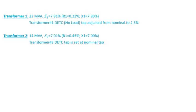Transformer 1: 22 MVA, impedance is 7.91% (R1=0.32%, X1=7.90%), here's resistance and reactance. Transformer 1 has a de-energized tap changer set one tap above nominal, so 2.5% above nominal. Transformer 2: 14 MVA, with impedance of 7.01% (R1=0.45%, X1=7.00%), here's resistance and reactance. Transformer 2 also has a de-energized tap changer but it's set at nominal tap.